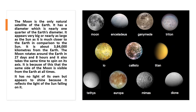Earth's moon is a natural satellite of the earth. It has a diameter which is nearly one quarter of earth's diameter. It appears very big, or nearly as large as the sun, as it is much closer to the earth in comparison to the sun.